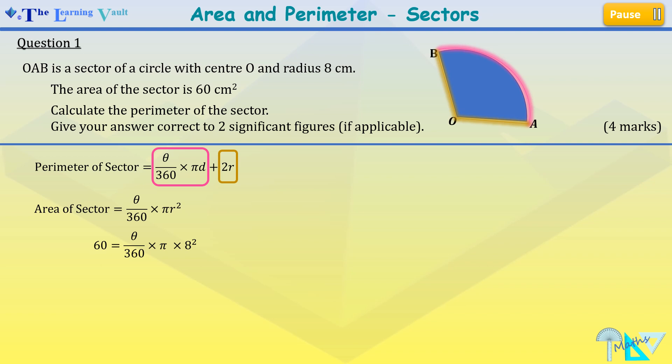By making theta the subject of the formula, we can now type that information into our calculator. Theta gives us 107.4295866 degrees.